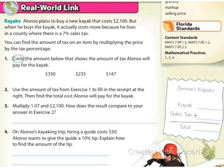So the real world link that they show here is Alonzo plans to buy a new kayak that costs $2,100, but when he buys the kayak, it actually costs more because he lives in a county where there's a 7% sales tax. That's what happens. You can find the amount of tax on an item by multiplying the price by the tax percentage. So it's $2,100 and he's paying 7%, and it says to multiply the price times the tax percentage.